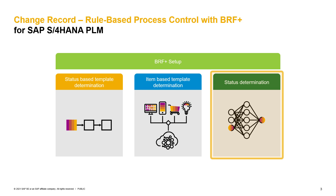Last but not least, you will see how the BRF+ setup of a status determination is working. For all three examples, we will also go into the S/4 customizing to make clear where the connection between BRF+ and the change record process route is happening. Please note that these three points are only examples of how a rule-based process control could work. The BRF+ application is highly flexible and can be adjusted to every business need and process.